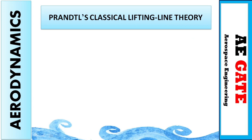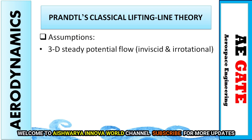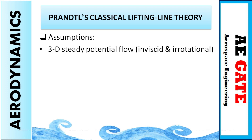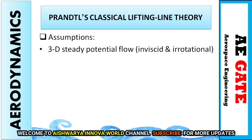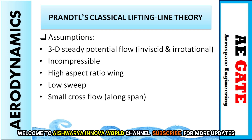Now comes the important Prandtl's classical lifting line theory. First, the assumptions: the flow is 3-dimensional, steady, and a potential flow; in addition it is inviscid, incompressible, and irrotational. It considers a high aspect ratio wing — meaning the aspect ratio is higher than 6 — with a low sweep angle, and small cross-flow along the span.